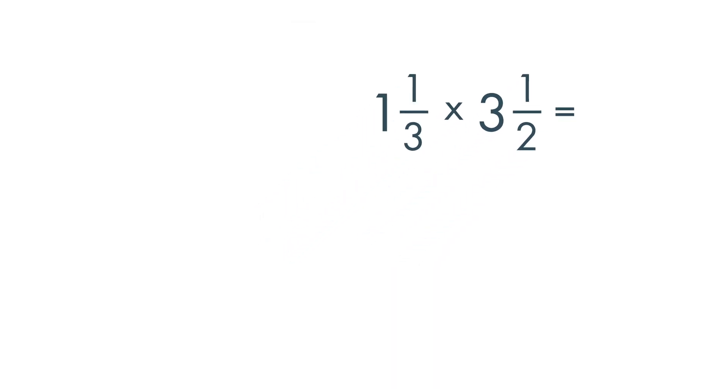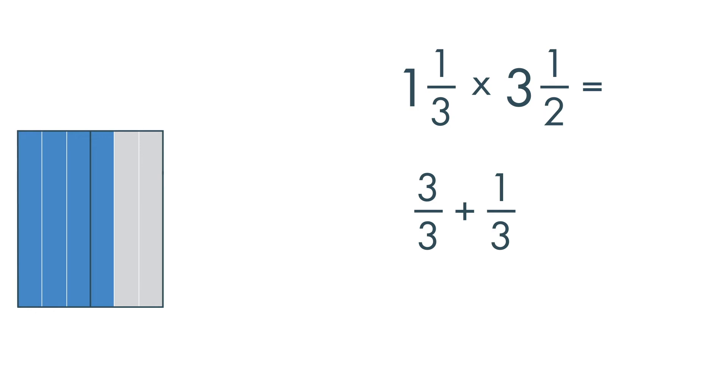To multiply mixed numbers, rename them as improper fractions. One and one-third can be renamed as three-thirds plus one-third. Three-thirds plus one-third is equal to four-thirds.